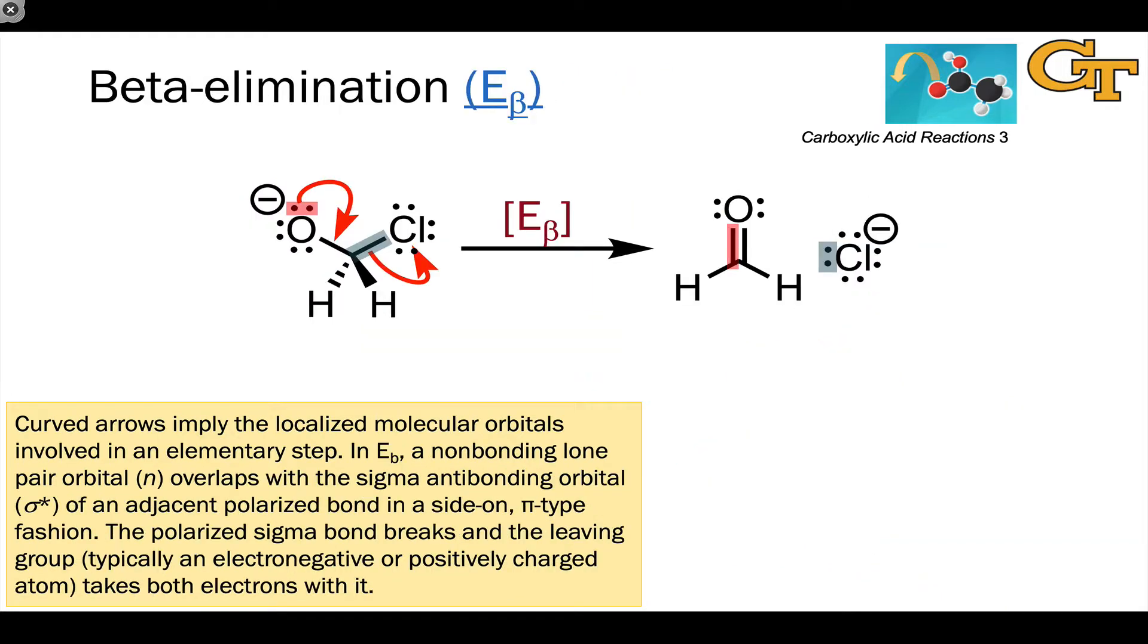Beta elimination is the microscopic reverse of nucleophilic addition. We actually generate a nucleophile in the products through n-to-sigma-star-type electron flow occurring internally in a starting material that looks like the product of a nucleophilic addition reaction. For example, this looks like the product of the addition of chloride to formaldehyde, the reverse direction.